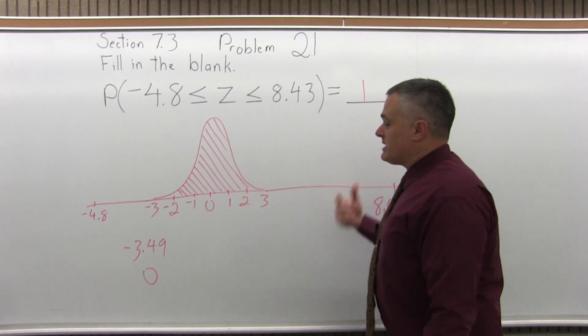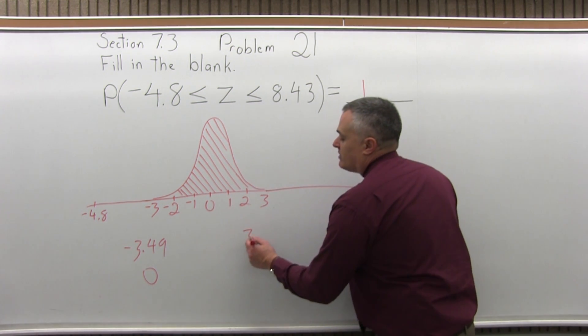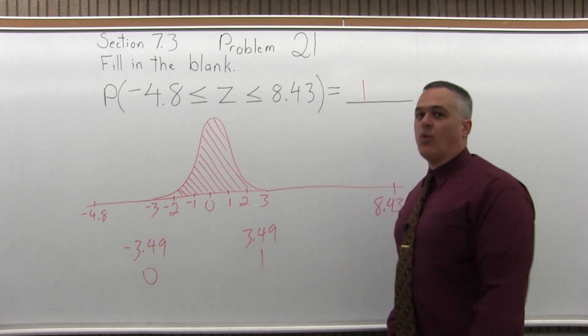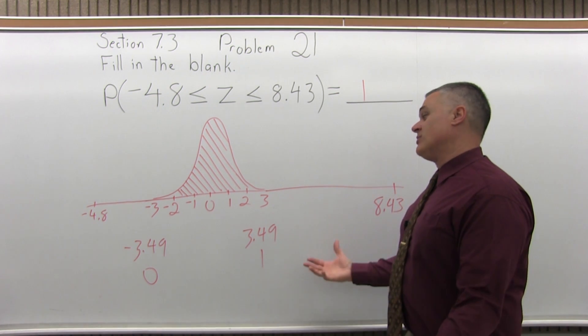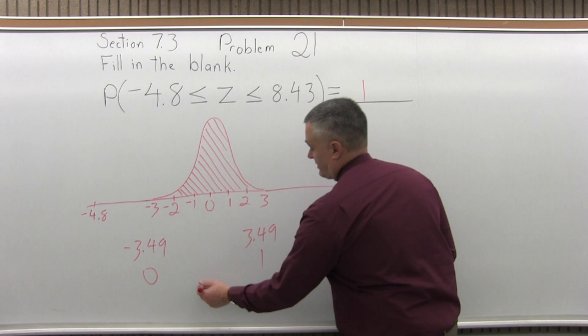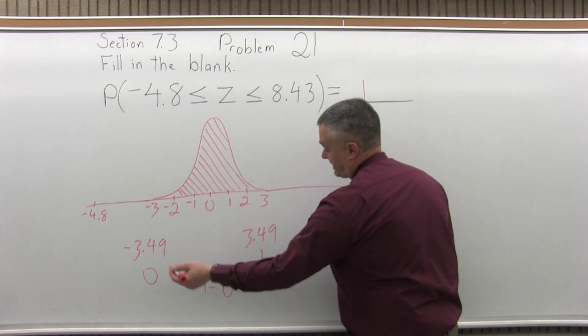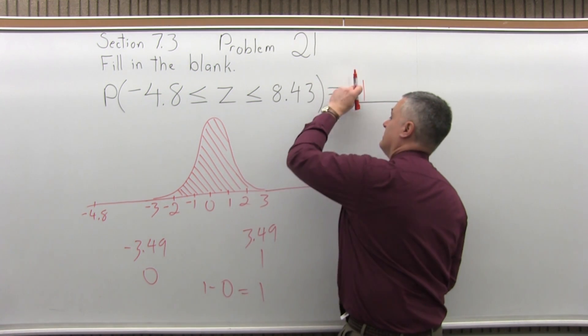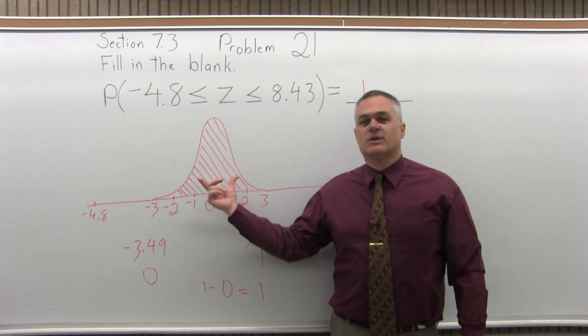And on the right end, the positive end, as you go past positive 3.49, the answer is essentially 1. So now, if you subtract the two chart values, and in order that gives you a positive result, you do 1 minus 0, which is 1, which I already knew the answer was because I was visualizing what the bell curve graph would look like.